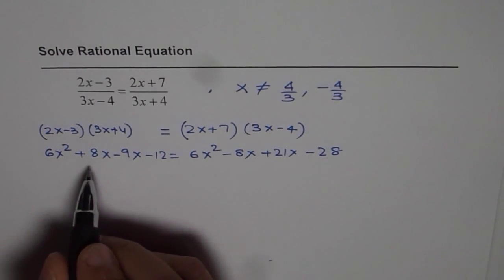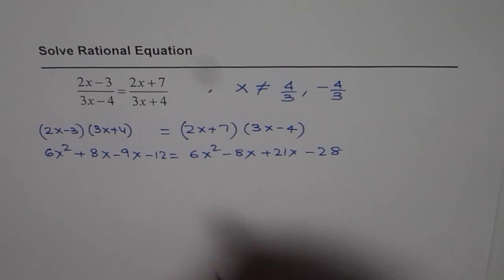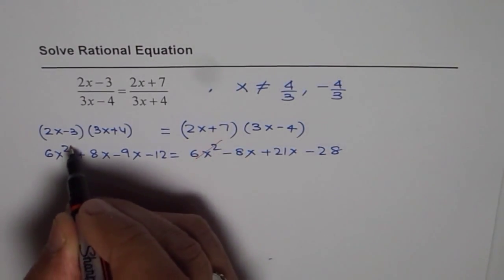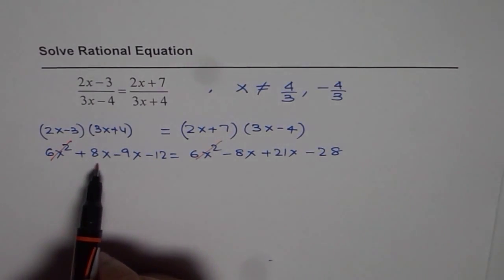So we can cancel out 6x squared on both sides. That simplifies the equation.